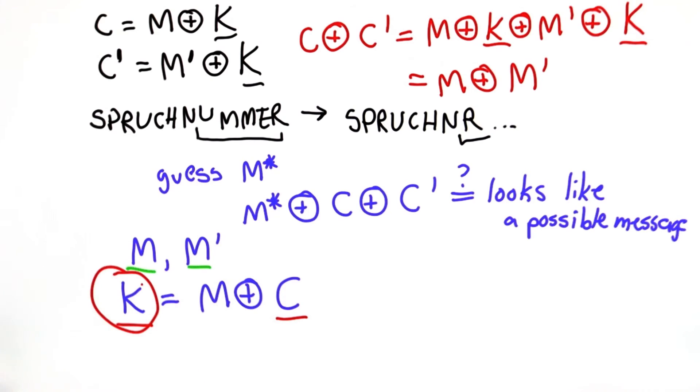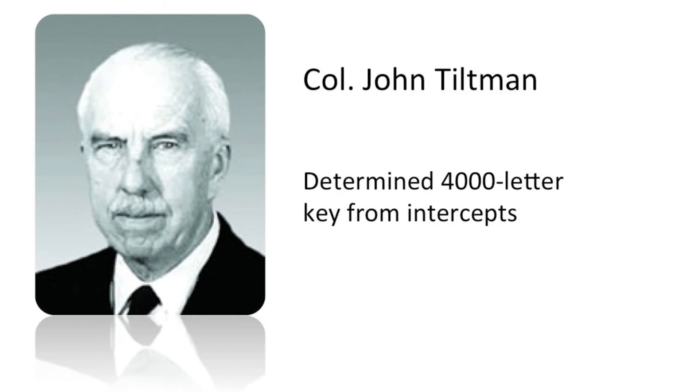But learning the key could be really useful. So this was done by Colonel John Tiltman, who took these two intercepts and determined the key that produced them. And they had enough content here that there were 4,000 letters in the intercepts. So they had a 4,000 long key.